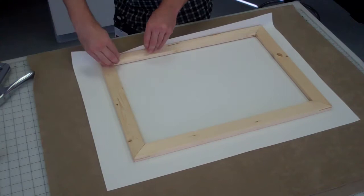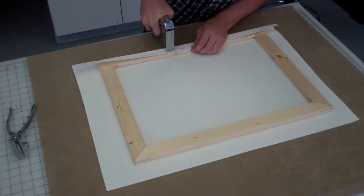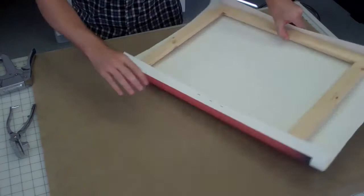The first few staples you put into your canvas are the most important. Start by stretching one edge of the canvas and placing a staple in the center. Place another staple on either end of the center staple.